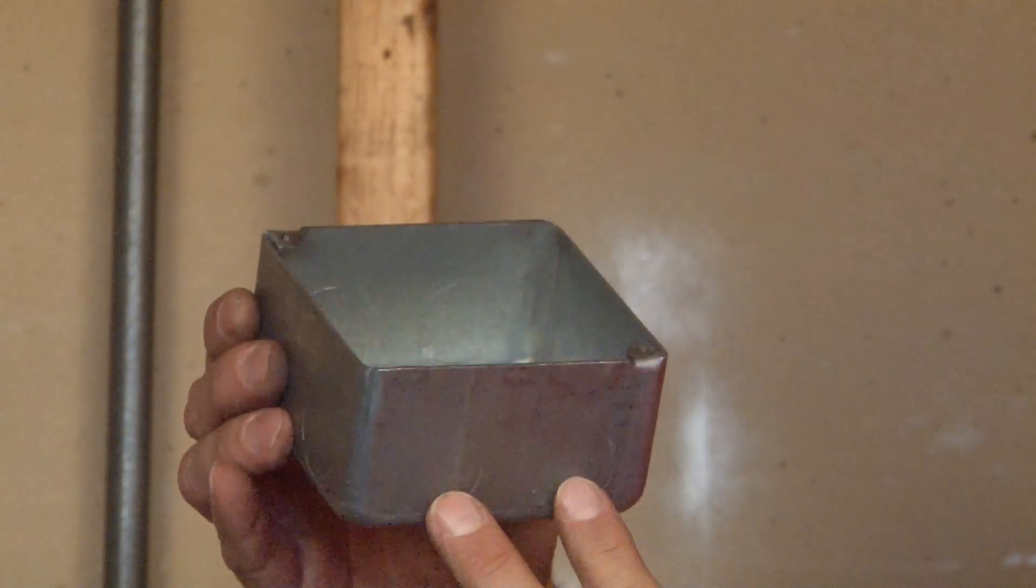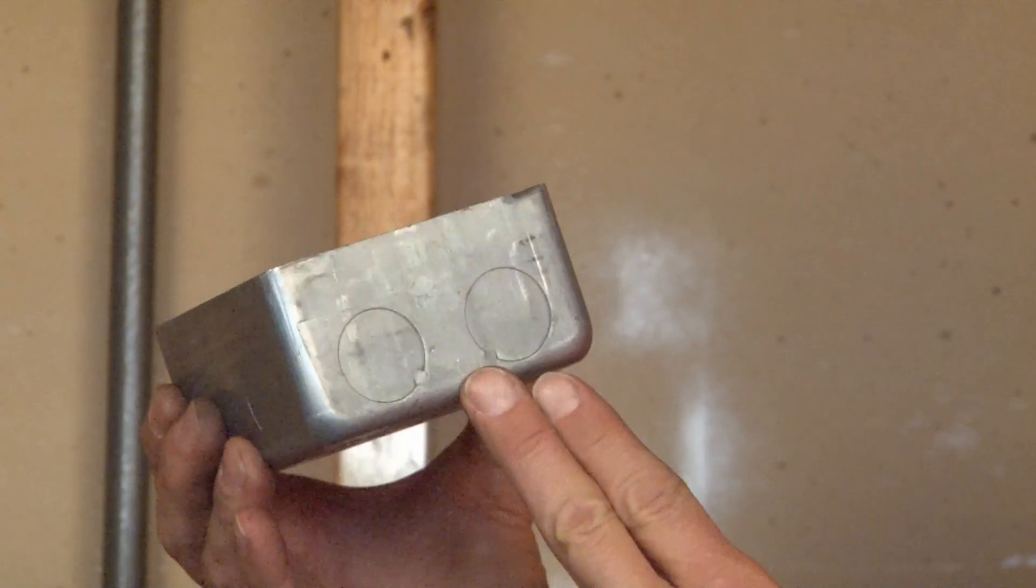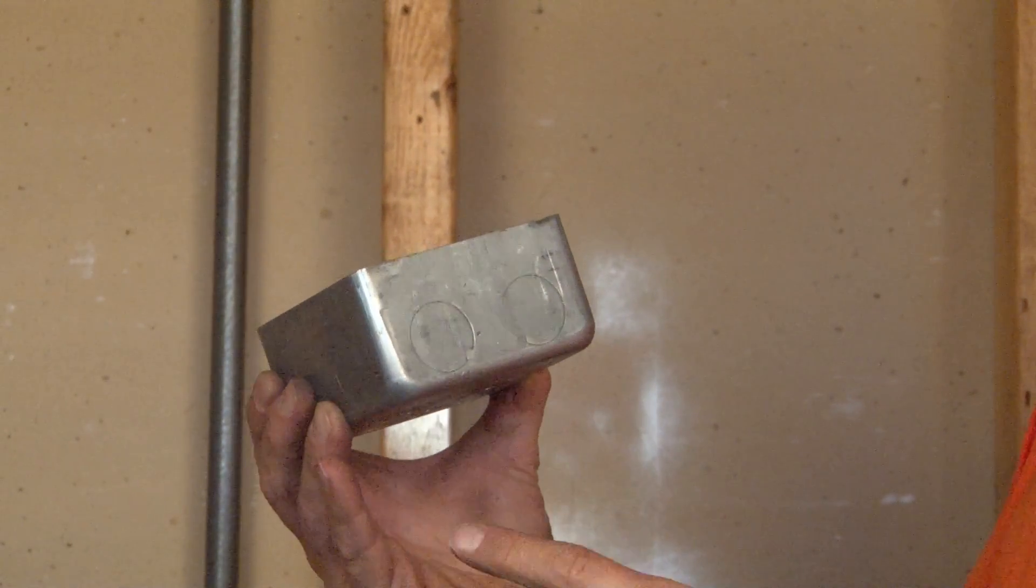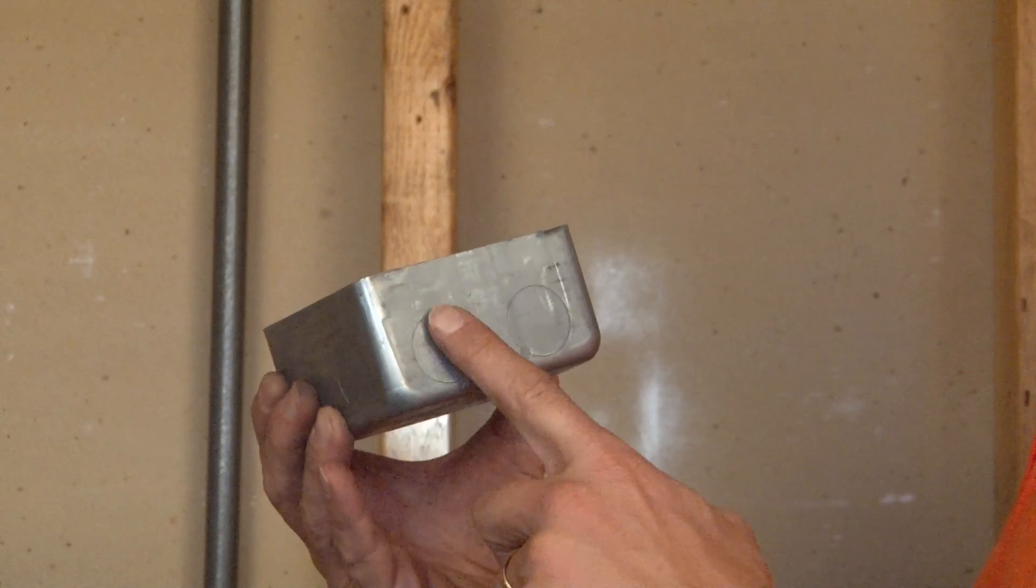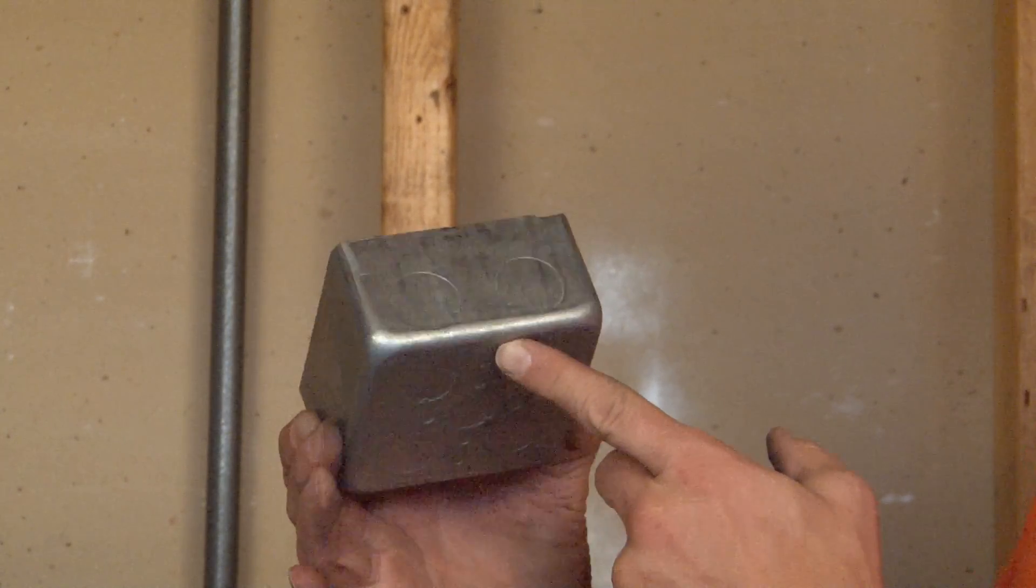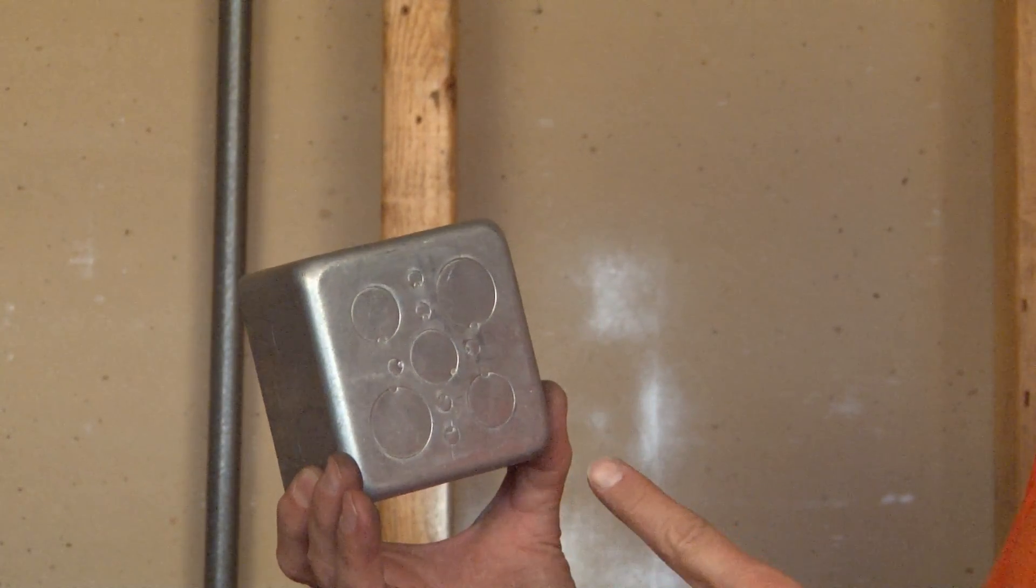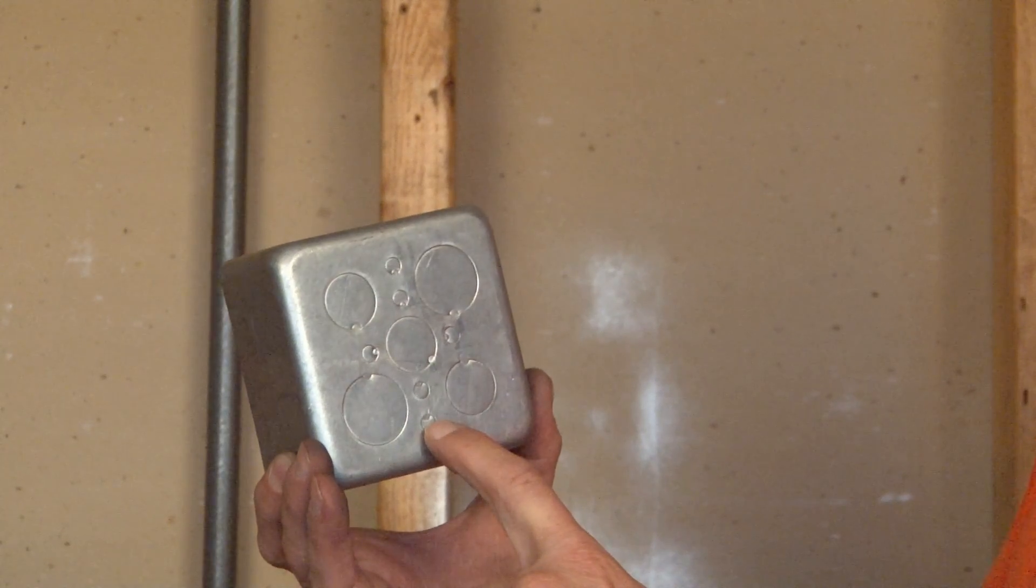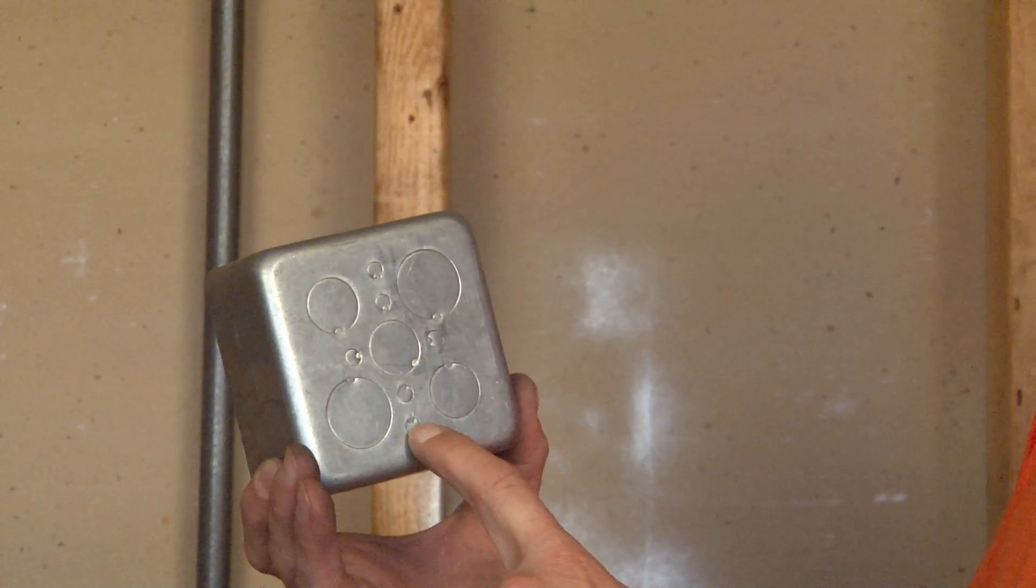The unique feature of this box is that the conduit knockouts, as you can see, have been re-hit with the surface of the box. This creates virtually an airtight seal around the sides and bottom of the box where the conduit knockouts are installed, along with the nail slugs for installing it.